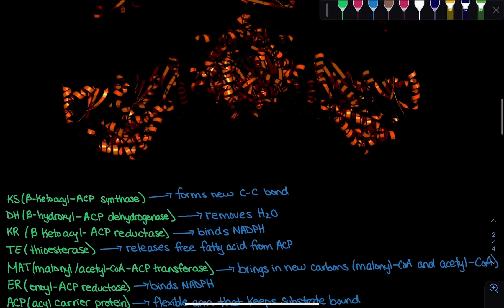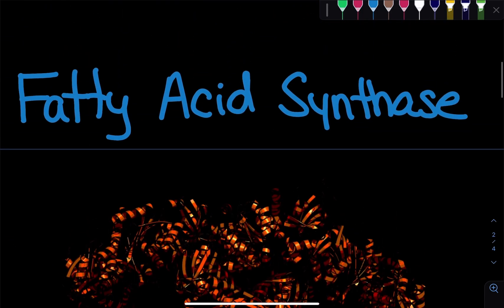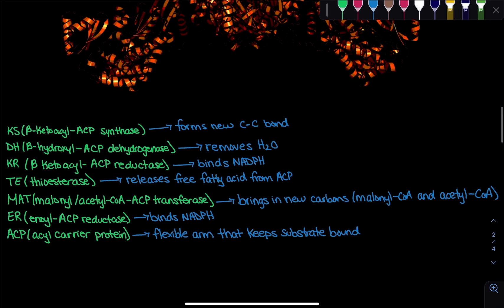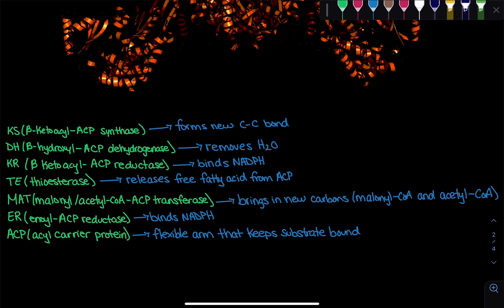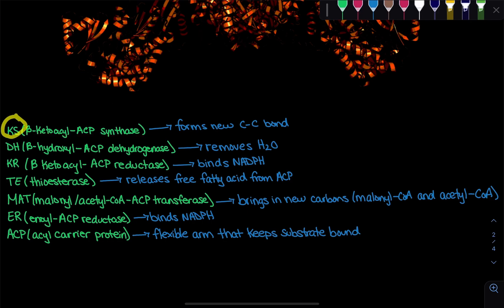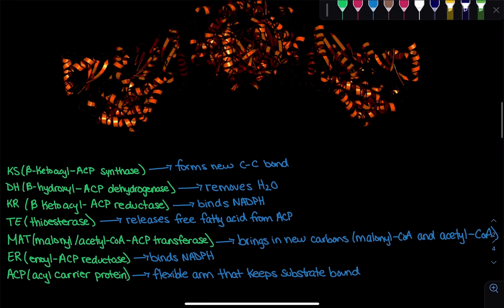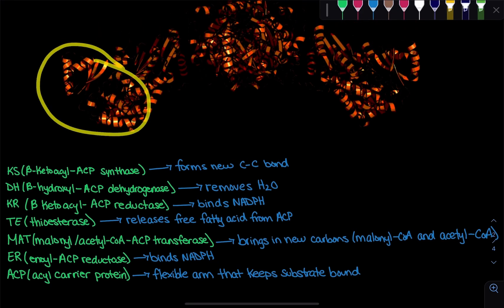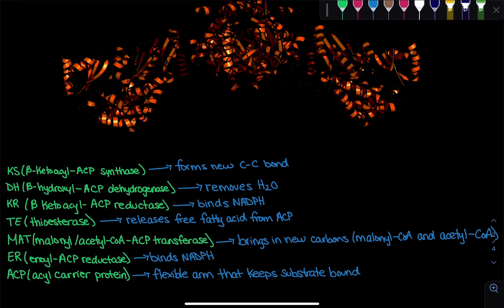Let's go over the domains on fatty acid synthase. Domain one is called the KS domain — the long form name is beta-keto acyl ACP synthase. At the KS domain, right over here, we are going to form a new carbon-carbon bond.